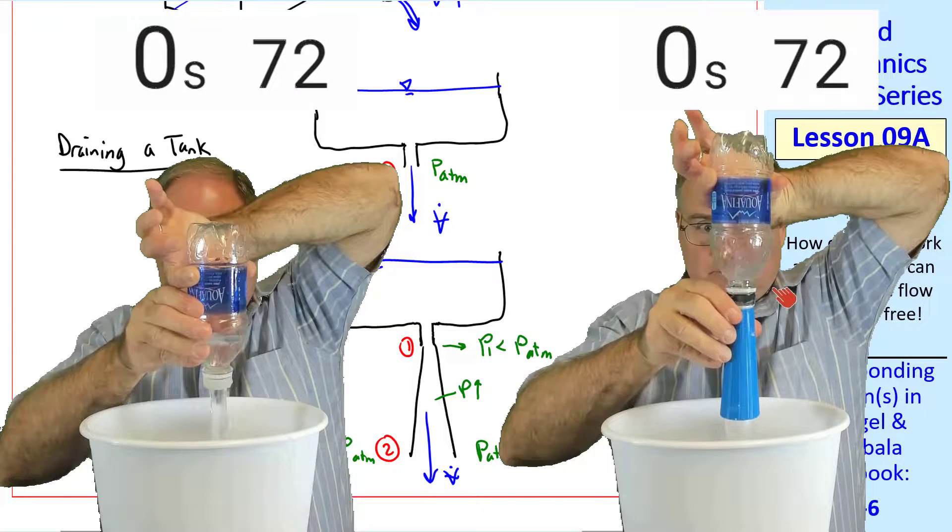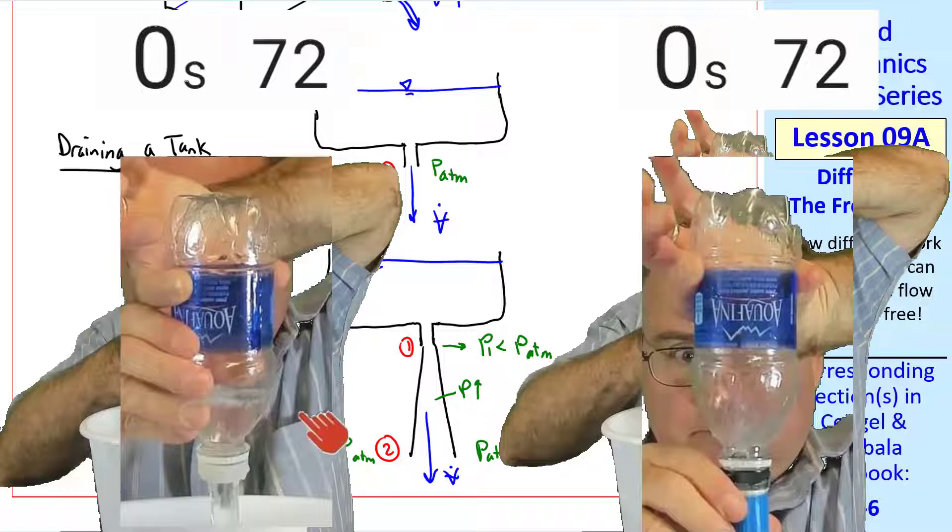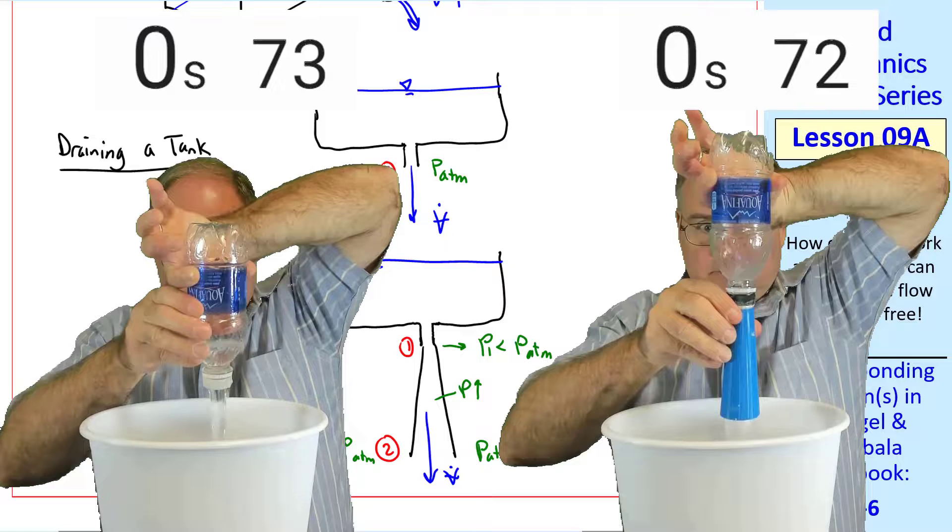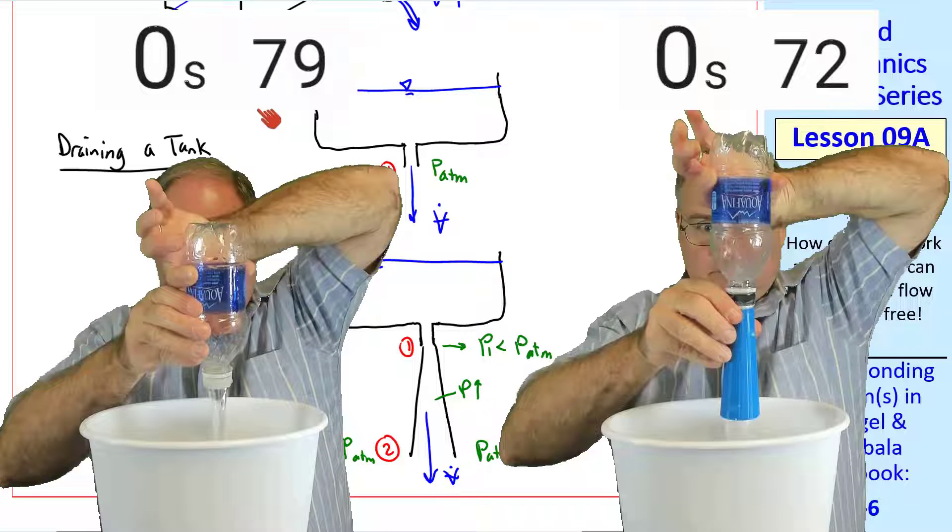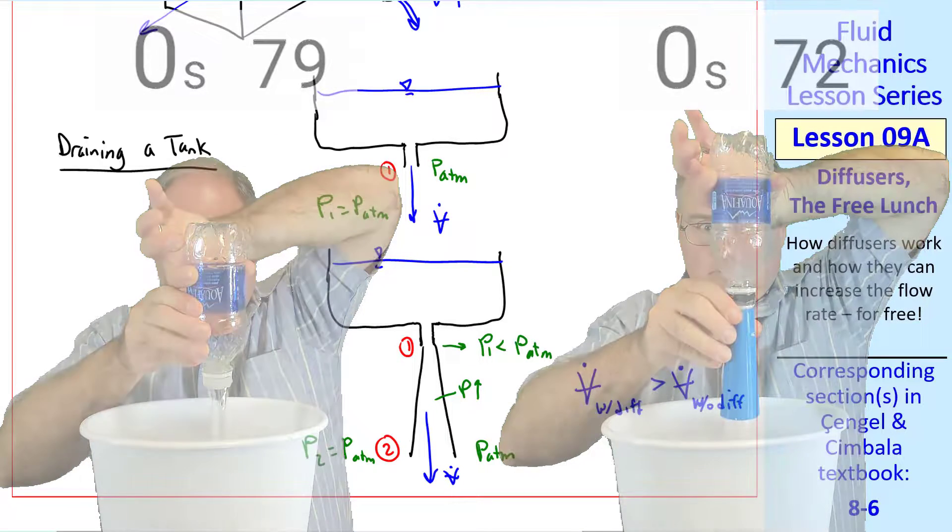You can see that the one with the diffuser has drained. While the one without the diffuser still has water in it. It takes longer for that one to drain. The diffuser has increased the volume flow rate.